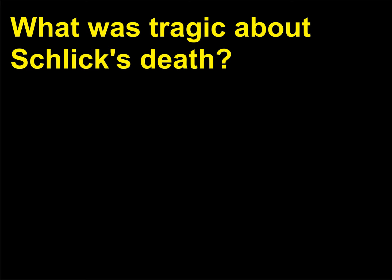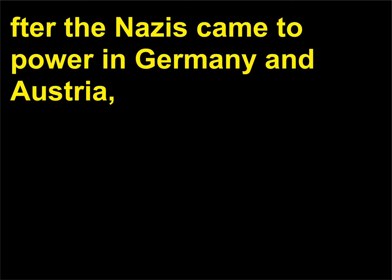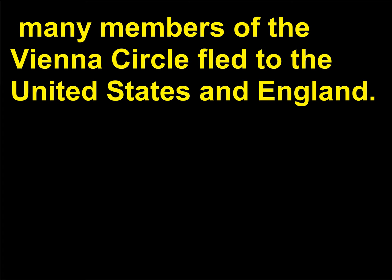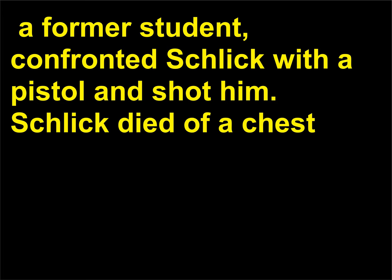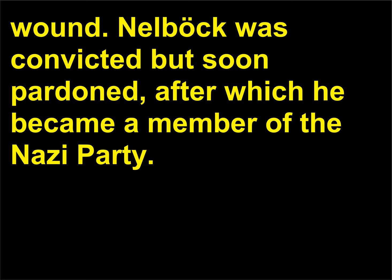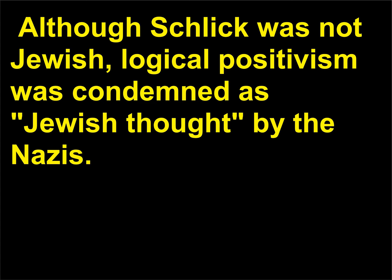What was tragic about Schlick's death? After the Nazis came to power in Germany and Austria, many members of the Vienna Circle fled to the United States and England. Schlick remained. Although not Jewish, he was distressed by what was then happening in Germany. While walking up some steps at the University of Vienna to teach a class on June 22, 1936, Johann Nelbach, a former student, confronted Schlick with a pistol and shot him. Schlick died of a chest wound. Nelbach was convicted but soon pardoned, after which he became a member of the Nazi party. Although Schlick was not Jewish, logical positivism was condemned as Jewish thought by the Nazis.